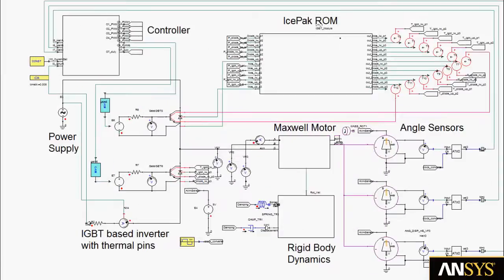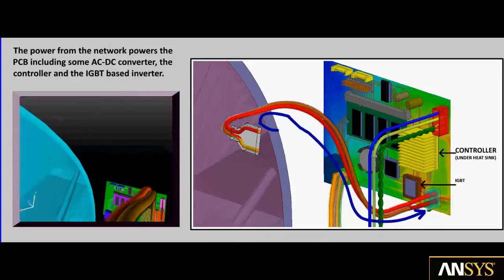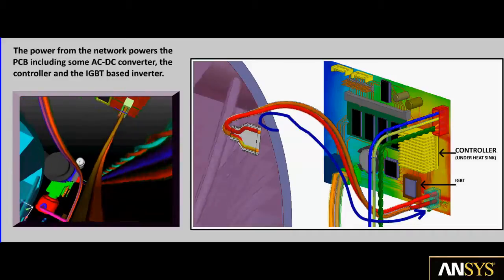We first consider the power supply in the ANSYS Simplora system simulation. The power is supplied to the IGBT inverter modules and the controller. The power from the network powers the printed circuit board including an AC to DC converter, the controller and an IGBT based inverter.